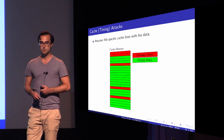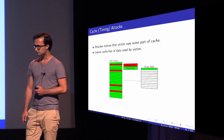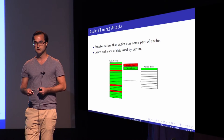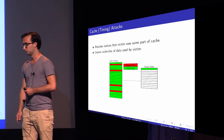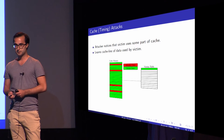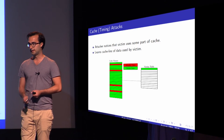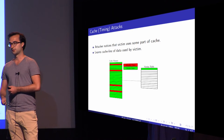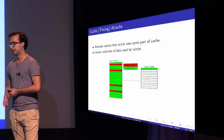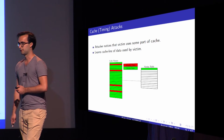The attacker will wait for the victim to perform cryptographic operations, and he will notice that some part of the cache has been used by the victim. In this case, you now see that the first cache line is containing victim data, meaning the attacker knows his data has been kicked out. So he learns which cache line was used by the victim, and from that he can derive the actual part of the data used in the cryptographic operation.